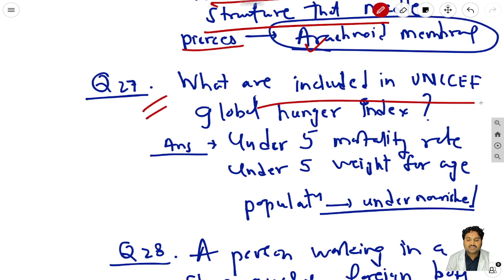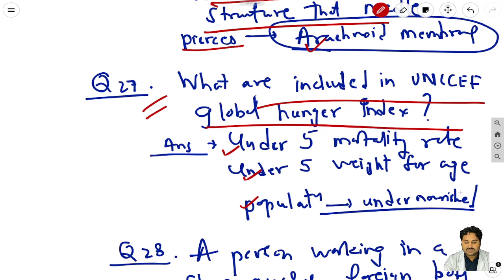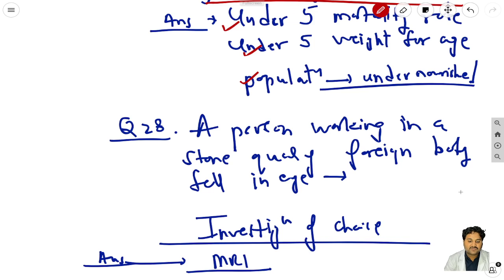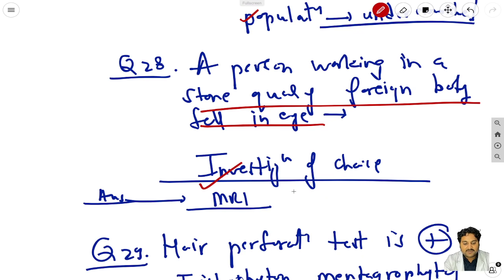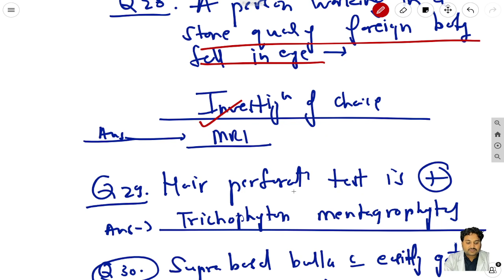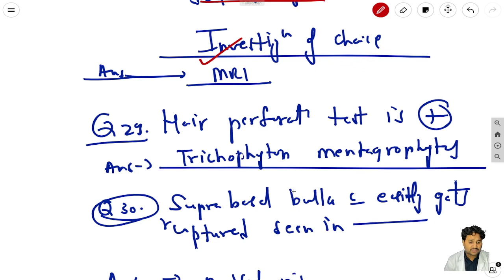Question 27: what is included in the UNICEF global hunger index? Under-5 mortality, under-5 weight for age, and population undernourished. Question 28: a person working in a stone quarry has a foreign body fall in the eye - the investigation of choice is MRI, in which you can clearly see all details.